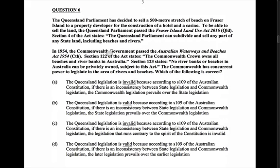What do we know about which prevails? Generally it depends upon what kind of power it is. If it's an exclusive power for the Commonwealth, the Commonwealth will prevail. If it's a concurrent power that they both have, then section 109 of the Constitution says the Commonwealth will prevail. If it's a residual power — meaning the Commonwealth doesn't have power and the powers were left with the states when they formed the federation — then the Queensland law will prevail.